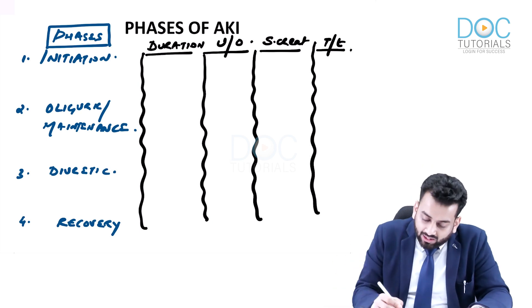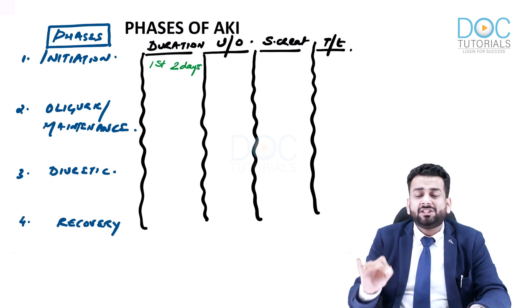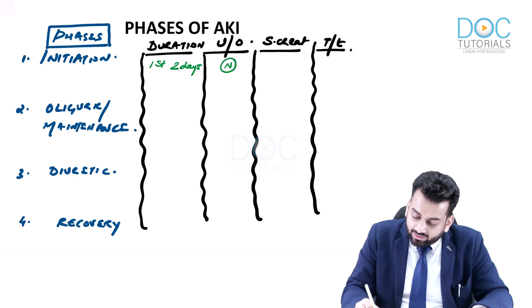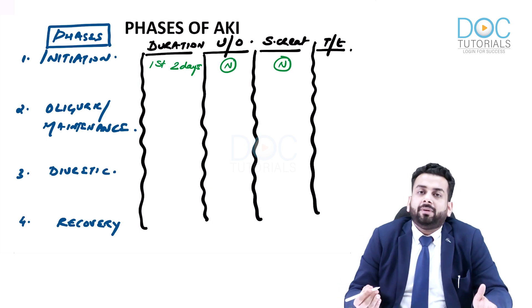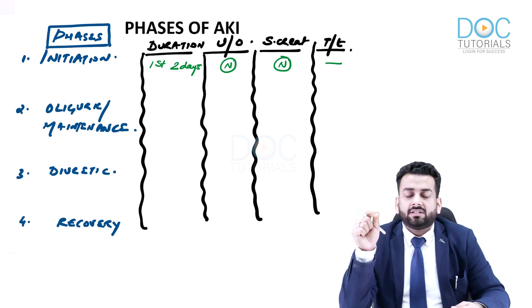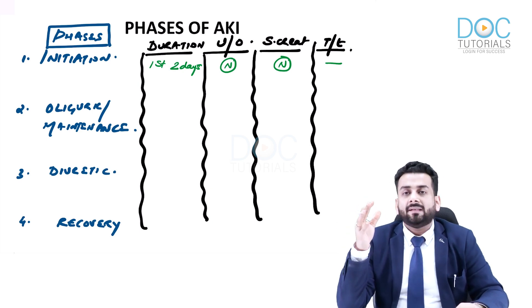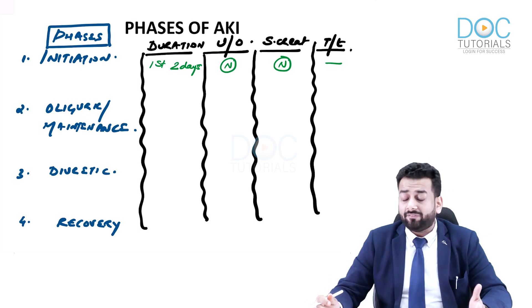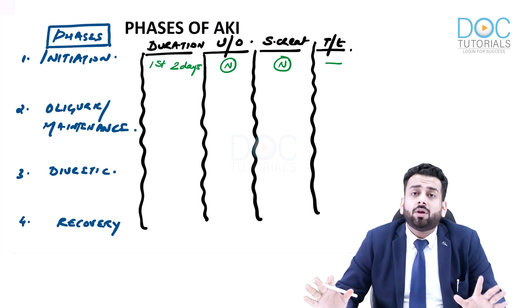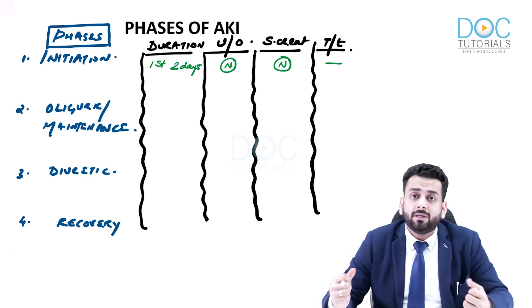The initiation phase usually lasts for the first two days. During this phase, urine output is almost normal and serum creatinine is almost normal, so there is no specific treatment. An injury may have occurred — perhaps a contrast agent was administered, a nephrotoxic drug was given, or a nephrotoxic infection occurred — but in the first two days there may be no symptoms of renal failure and creatinine may be completely normal.